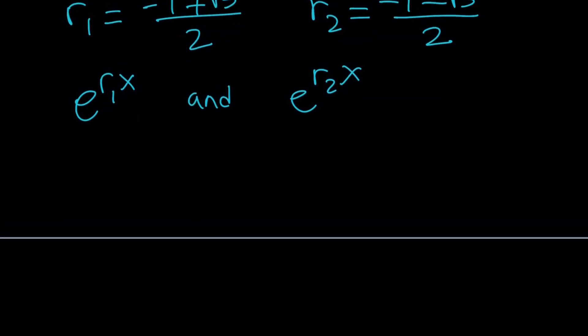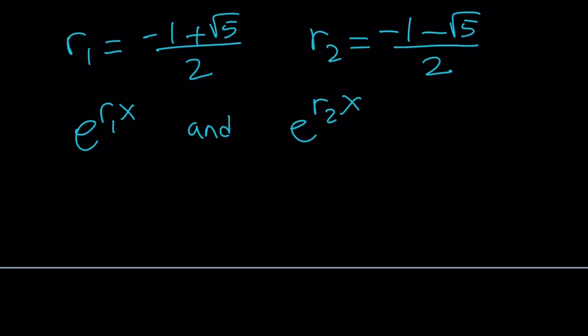So if c1 and c2 are real constants, then we can go ahead and write this solution as y equals c1 times e to the power r1x plus c2 times e to the power r2x, where c1 and c2 are just real numbers.